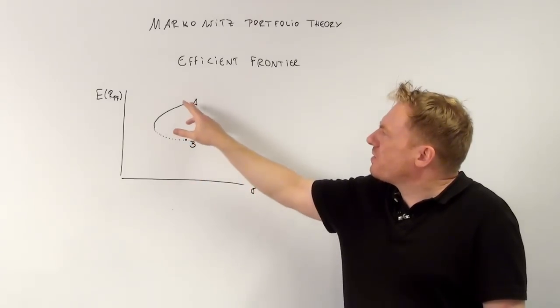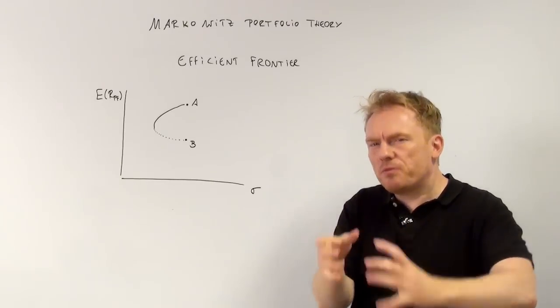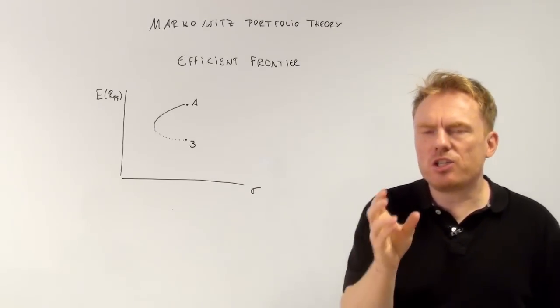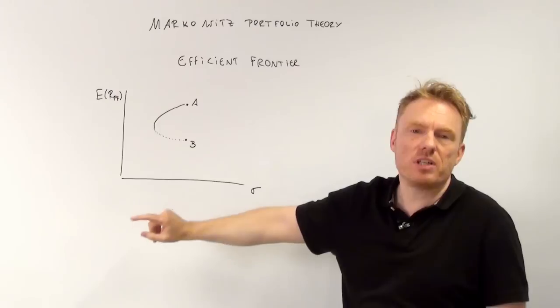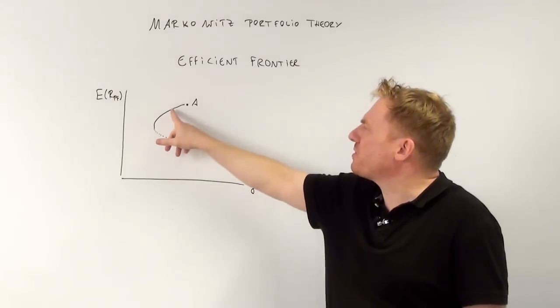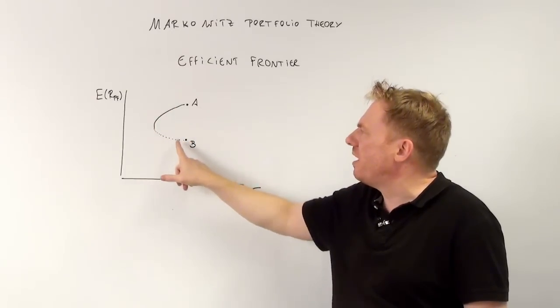So there are always different combinations. If we look at different combinations of share A and share B, like 50% of share A, 50% of share B, or 70% share A, 30% share B, we get this line.